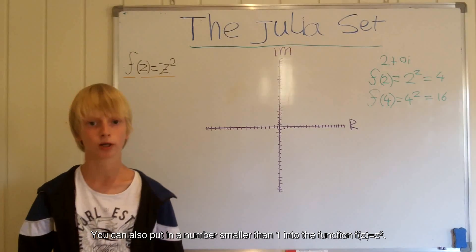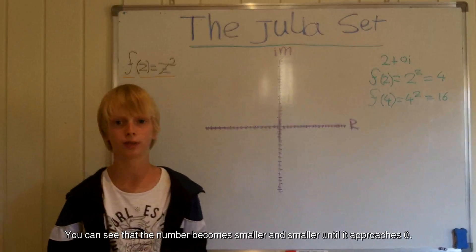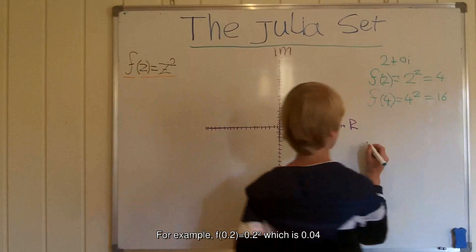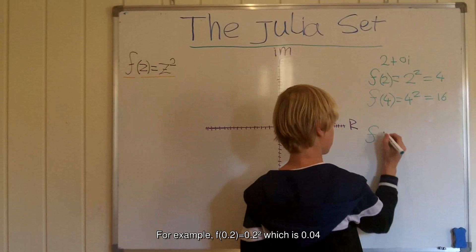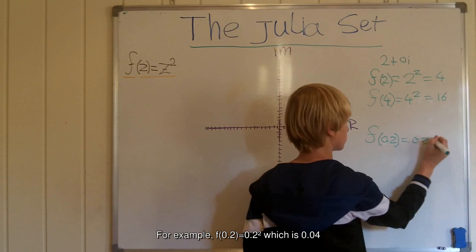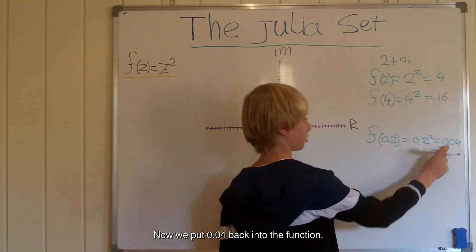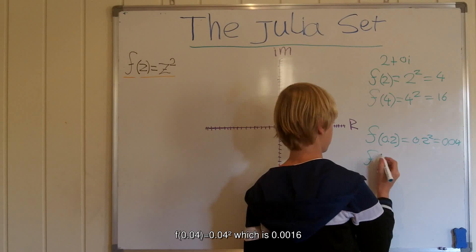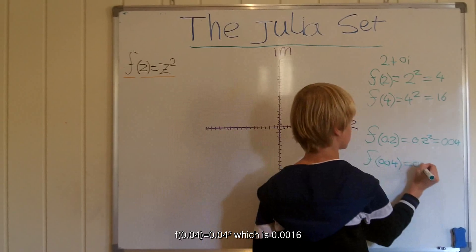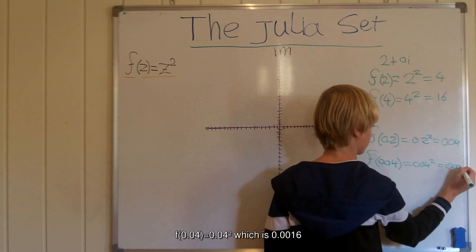You can also enter a value smaller than 1 in the function f of z is equal to z squared. You can see that the value becomes smaller and smaller until it approaches 0. For example, the function of 0.2 is equal to 0.2 squared which is 0.04. Now we put that back into the function. The function of 0.04 is equal to 0.04 squared which is 0.0016.